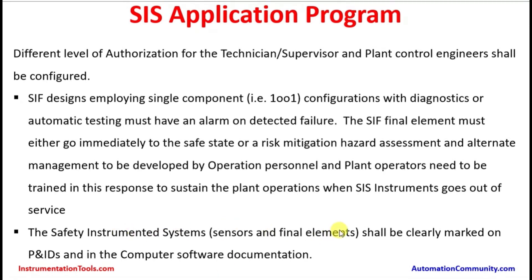The safety instrumented system sensors and elements shall be clearly marked on the P&IDs and in the computer software documentation. The piping and instrumentation diagram should have clear marking about the safety instrumented system sensors and field limits. This ensures that operations or maintenance personnel working on it will exercise caution, as they cannot simply close the isolation valves of a transmitter that is part of a safety instrumented system — because this will lead to non-sensing of the process and may create trouble for that section of the plant.